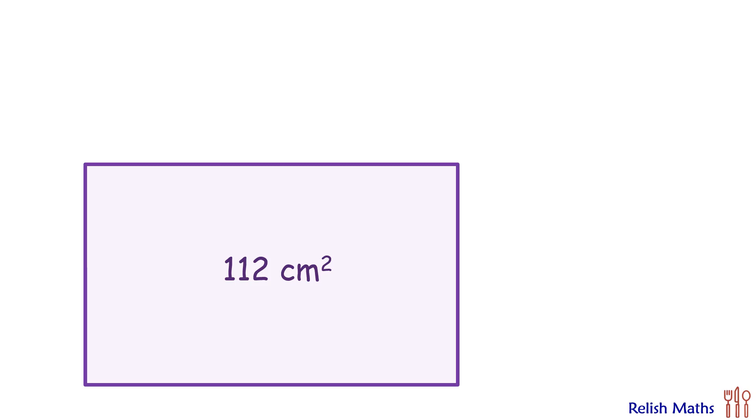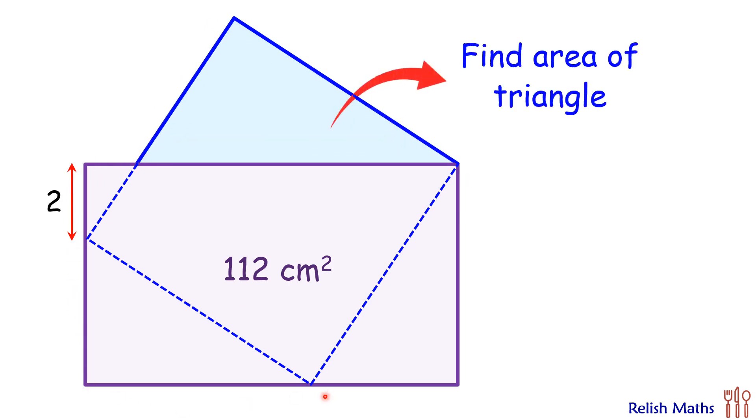Welcome back everyone. In this interesting question, given is a rectangle with area 112 centimeter square. In the rectangle we are putting a square as shown. Given is this dimension here is 2 centimeter. And if we shade the above triangle blue in color, the question is: using this limited data, we have to find the area of the triangle.